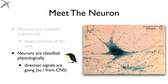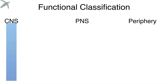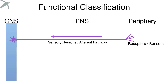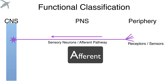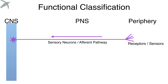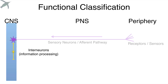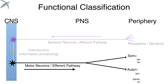We also classify neurons physiologically — based on function, not what they look like. This has to do with the directionality of the message. Neurons from the periphery that collect information are called receptors or sensors, and the neurons carrying that information we call sensory, also referred to as afferent with an A. That information goes into the brain and spinal cord — the central nervous system — where neurons that live exclusively there are called interneurons, the most complex of all neurons. Then we have neurons carrying information from the brain and spinal cord out to the periphery, which we call motor or efferent.